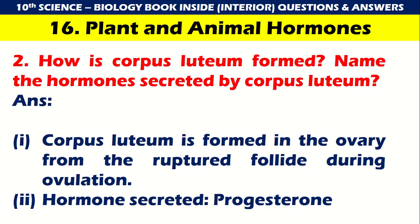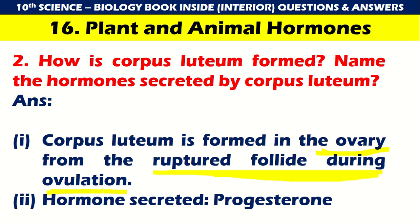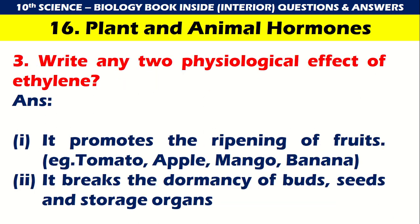How is corpus luteum formed? Name the hormones secreted by the corpus luteum. Corpus luteum is formed in the ovary from the ruptured follicle during ovulation. The hormone secreted is progesterone.